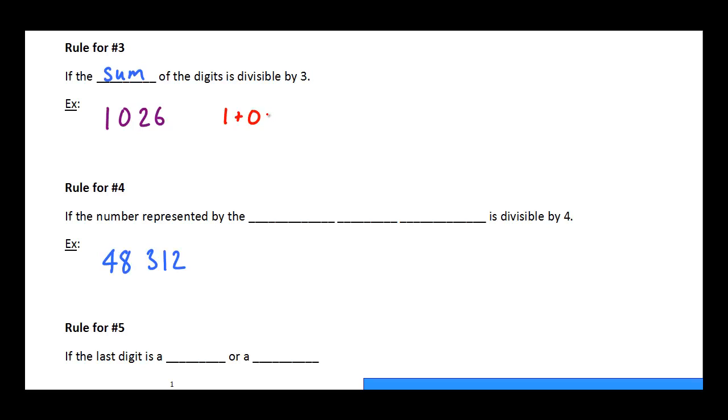1 plus 0 plus 2 plus 6. So 1 plus 0 is 1, plus 2 is 3, plus 6 is 9. And then all we have to do is look at this number here and ask ourselves, is 9 divisible by 3? Yes, it is. So therefore, 3 must be a factor of 1,026.